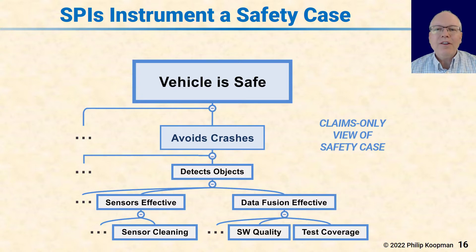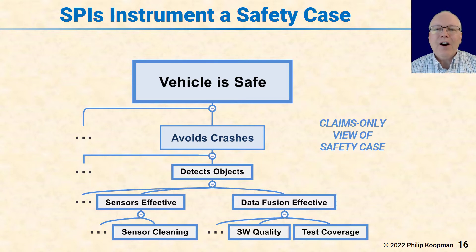A safety case is more than just the behavior. The safety case for a UL 4600 application has to do with the entire life cycle of the vehicle, all the software, and all the infrastructure that supports it. All that has to be in place to get safety, and the safety case needs to reflect that.